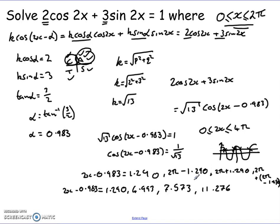And then to get the final bits now, I simply add on my 0.983 to each of these solutions and then half them. So if I add on 0.983, I get 2x equals 2.273, 5.976, 8.556 and that's 12.259.